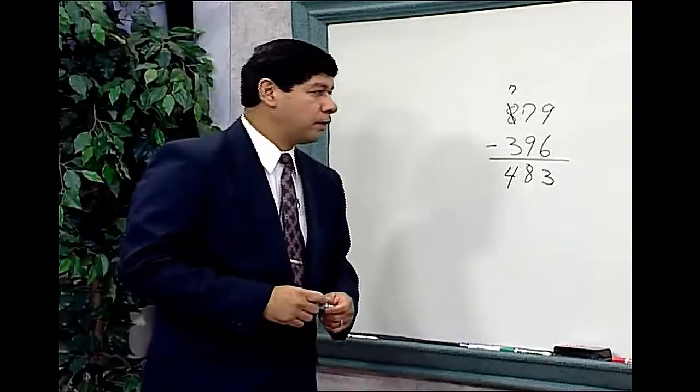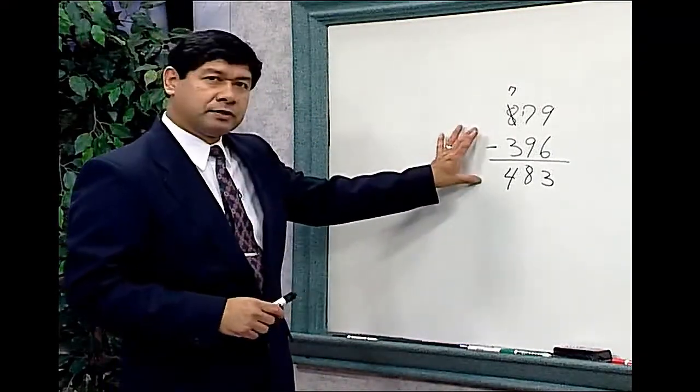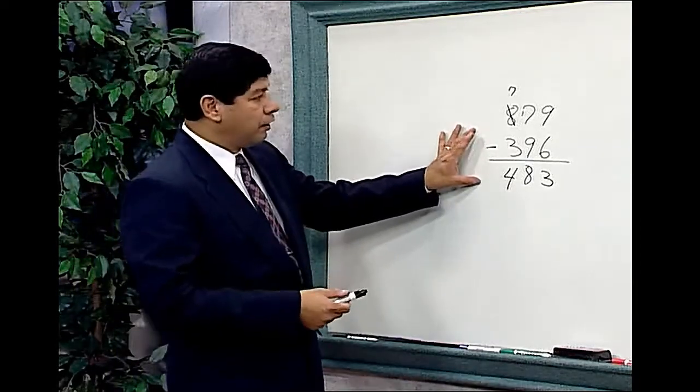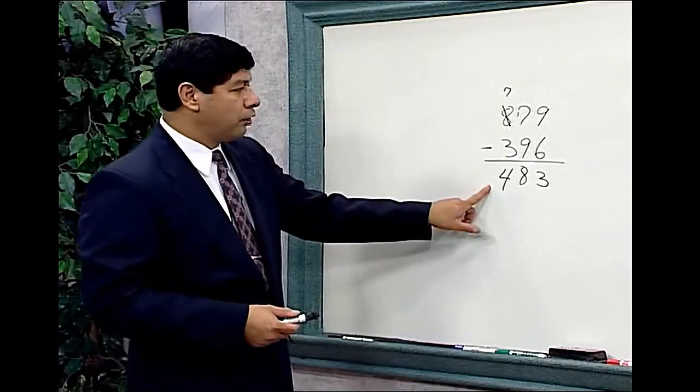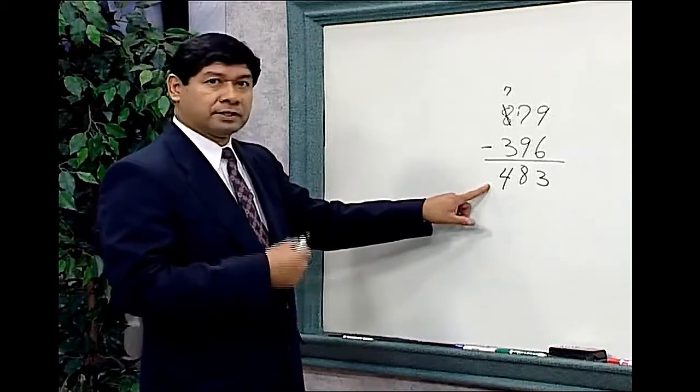One of the things we always want to do when we subtract two numbers is to check our work. And in subtraction, checking is nothing more than adding what we originally subtracted. So our solution, we had 483, and to that we're going to add what we originally subtracted.